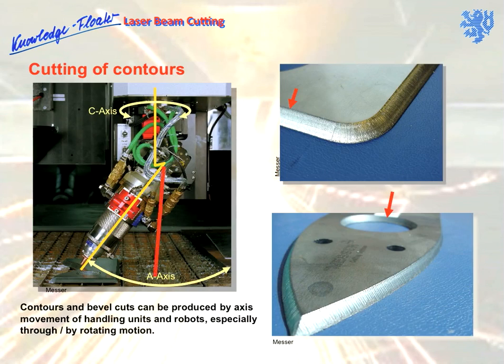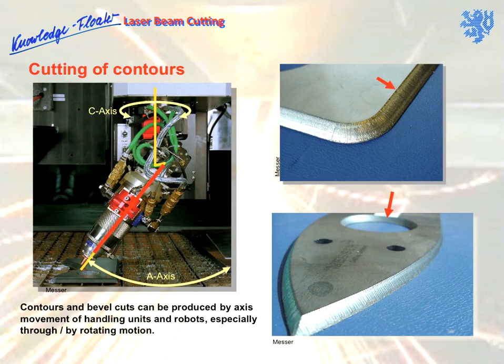The robotic handling unit and the nozzle are movable in various directions. Not only straight cuts can be performed, but also any kind of bevel cuts. For this task, angle-adjusting elements and a circular axis work together in a wrist-like motion mode.